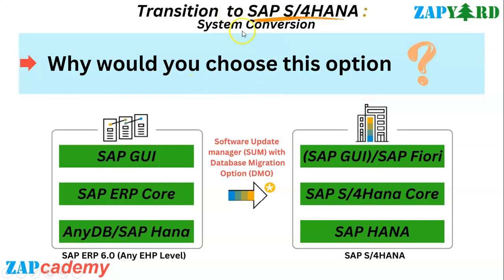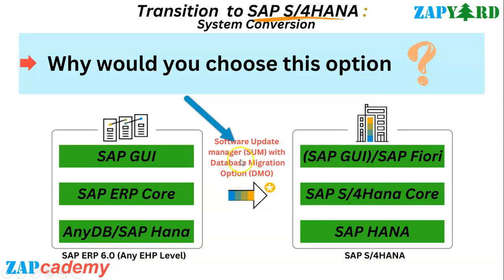Looking further into system conversion via the brownfield implementation approach: if you are on a core SAP ECC solution at version 6.0 and above, or on SAP ERP on HANA (suite on HANA), the most favorable migration target is SAP S4HANA on-premise or SAP S4HANA private cloud edition. The tool primarily used here is the SUM tool — the Software Update Manager — including the database migration option, which converts your existing source system into SAP S4HANA.